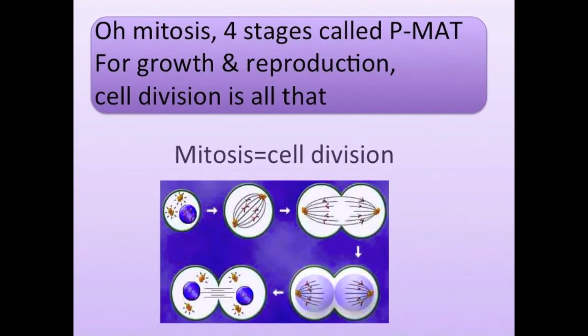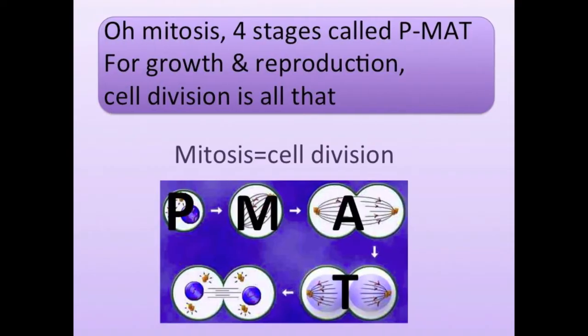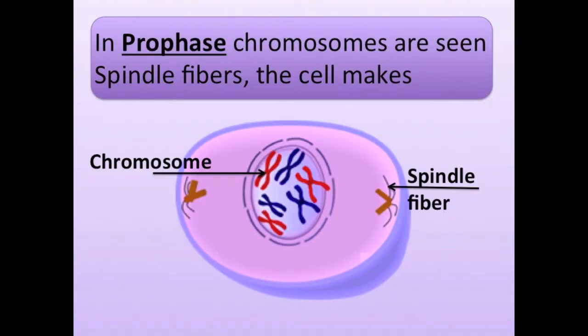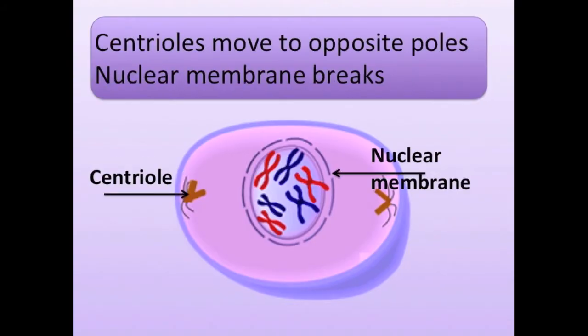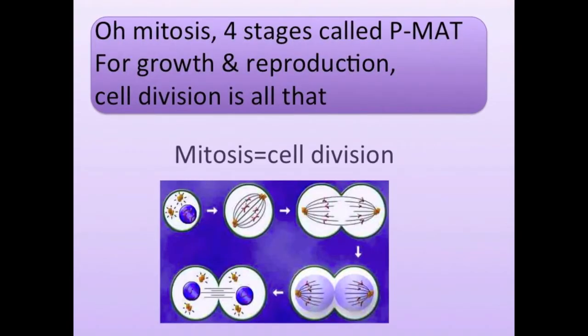Mitosis has four stages, call PMAT. For growth and reproduction, cell division is all that. In prophase, chromosomes condense, spindle fibers the cell makes. Centrioles move to opposite poles, nuclear membrane breaks.